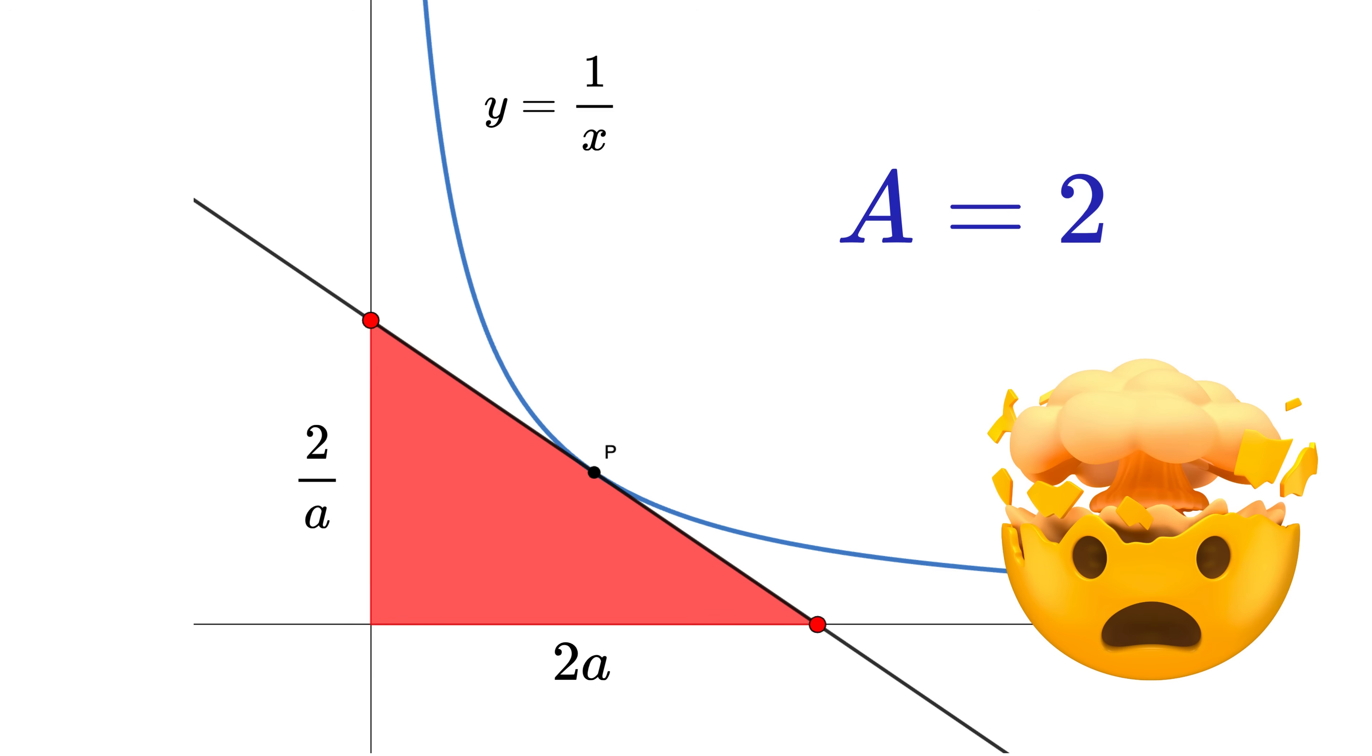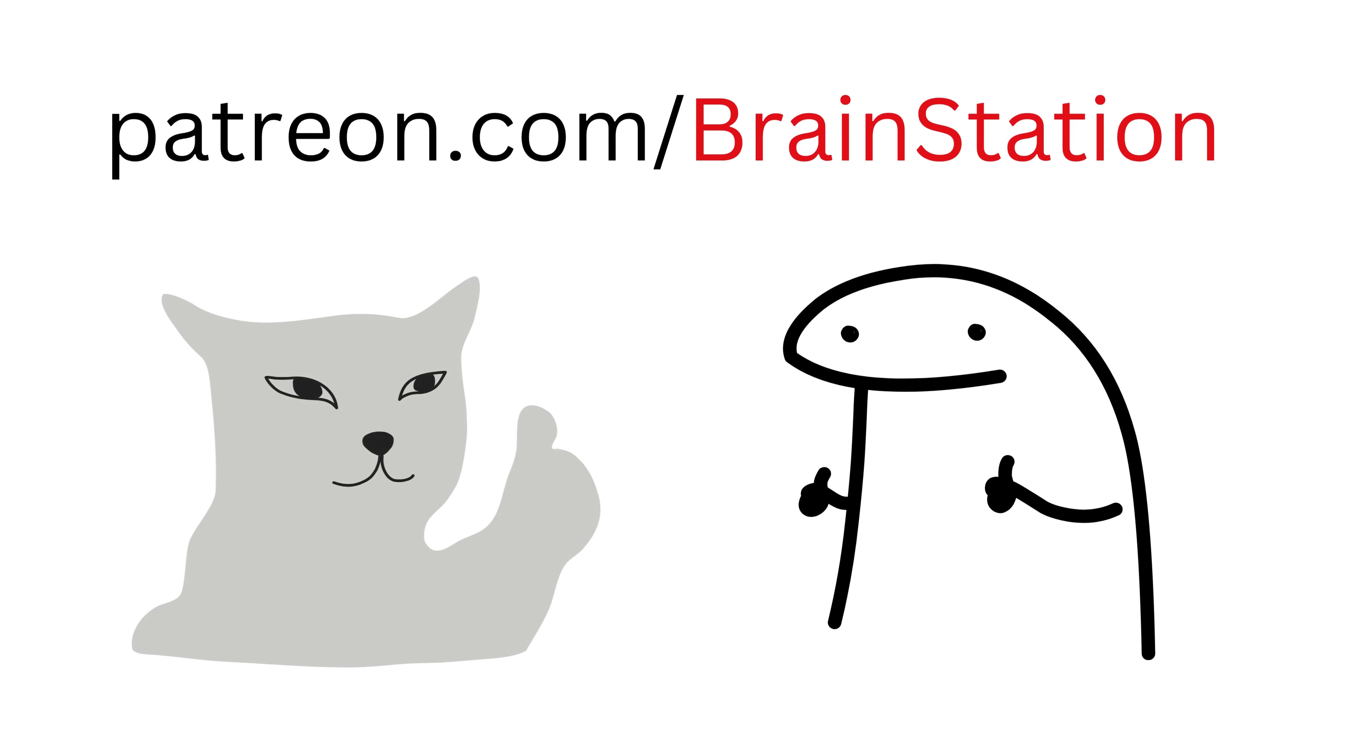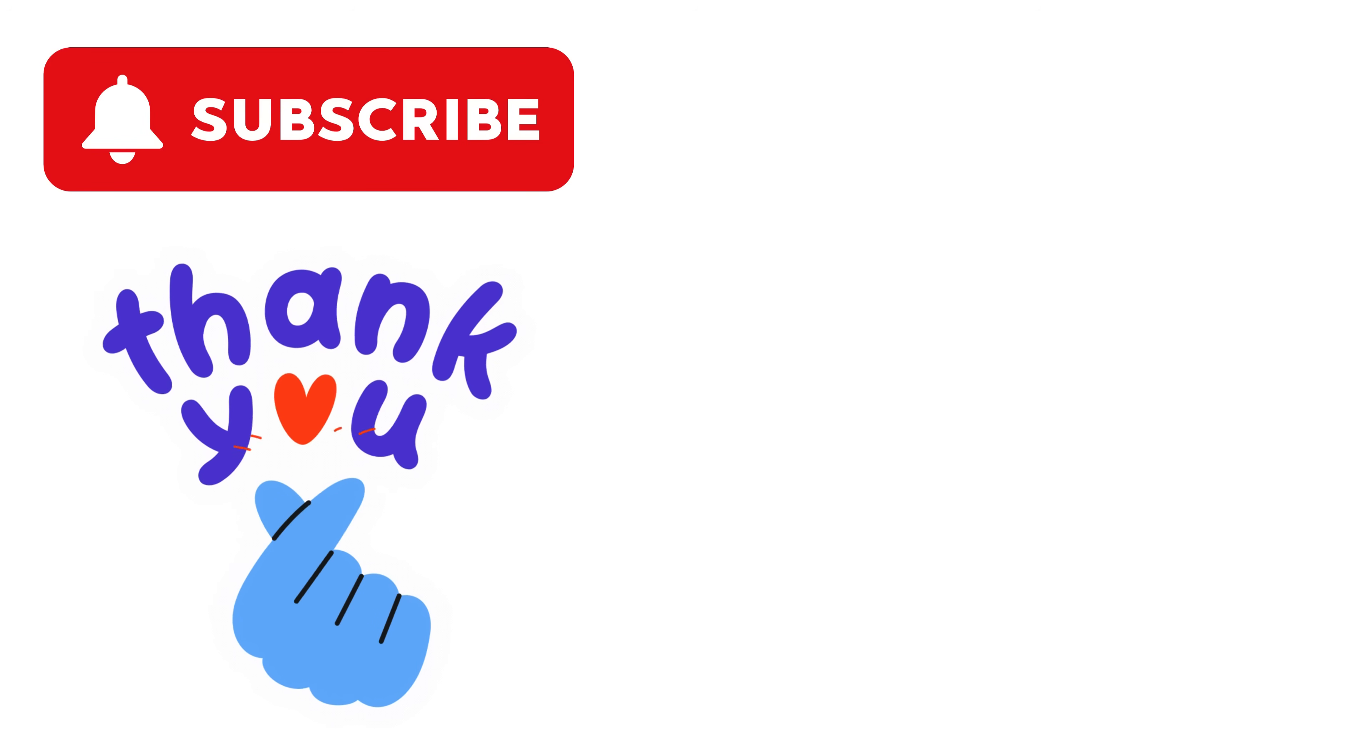This is the most surprising part. The area of the triangle formed by the tangent and the coordinate axes is always constant and equal to 2. No matter where the tangent is drawn on the curve, y equals 1 by x. Isn't this amazing? So good!